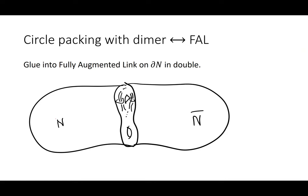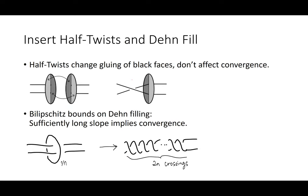Once we have a circle packing, we pick a dimer. The nerve of the circle packing is a triangulation; we add a new circle to each interstitial region, which subdivides each triangle. The solid edges from the original triangles then give a dimer — one edge per triangle. With a triangulation and a dimer, we can build a fully augmented link, glue it into the boundary of N, and put it inside the double. This is the geometric link that converges to the target manifold, and you can turn it into a knot by adding as many crossings as you want.